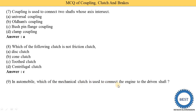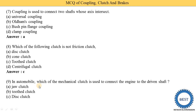In an automobile, which mechanical clutch is used to connect the engine to the driven shaft? Options: jaw clutch, jaw clutch type, and disc clutch. Option C is the correct answer — the disc clutch is used in automobiles.